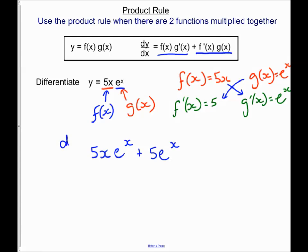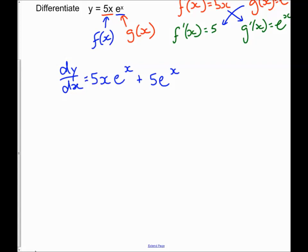So this was y, I've differentiated it, so I get dy by dx. With practice you'll be able to say y equals 5x e to the power x, dy by dx equals differentiate the first bit, leave the second bit, plus leave the first bit, differentiate the second bit. And you can see I get the same thing.